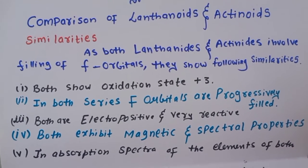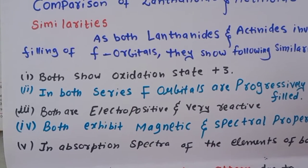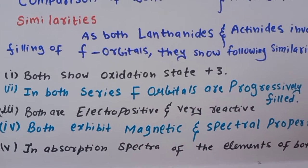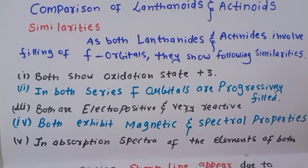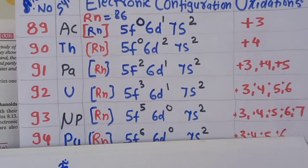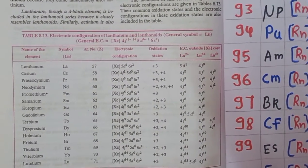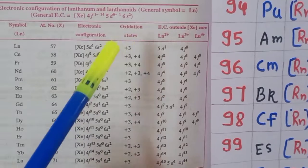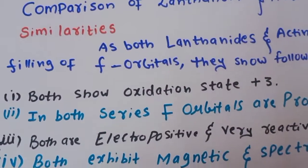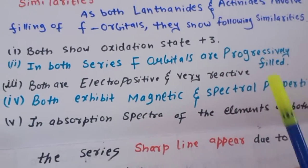The first similarity: both lanthanides and actinides show a +3 oxidation state. As discussed in a previous video, the +3 oxidation state is common throughout both series — it is the most stable and predominant oxidation state for both lanthanides and actinides.